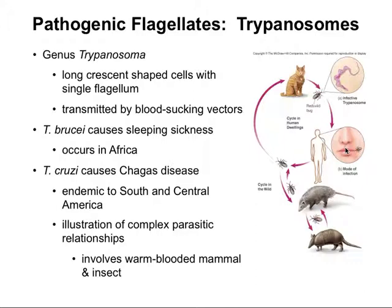The figure on the right illustrates the complex parasitic relationship, and it involves a warm-blooded mammal and an insect. The insect of interest here is the Reduviid bug, otherwise known as the kissing bug, due to its propensity to bite the corner of the host's mouth. This disease is usually passed from bug to mammal and mammal back to bug, but not usually from mammal to mammal, except during pregnancy.